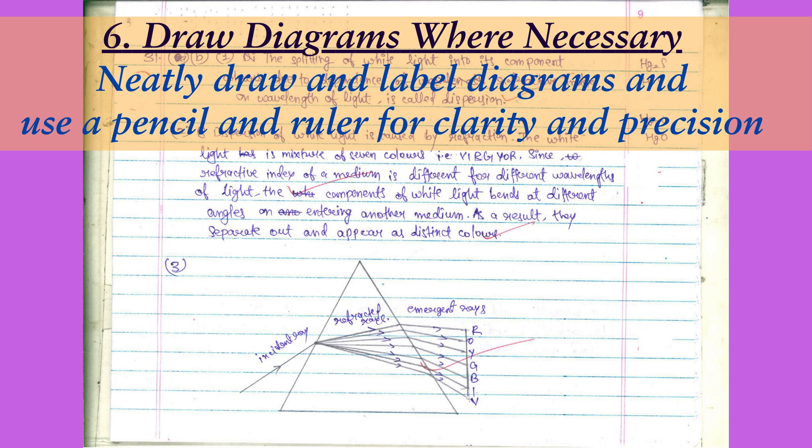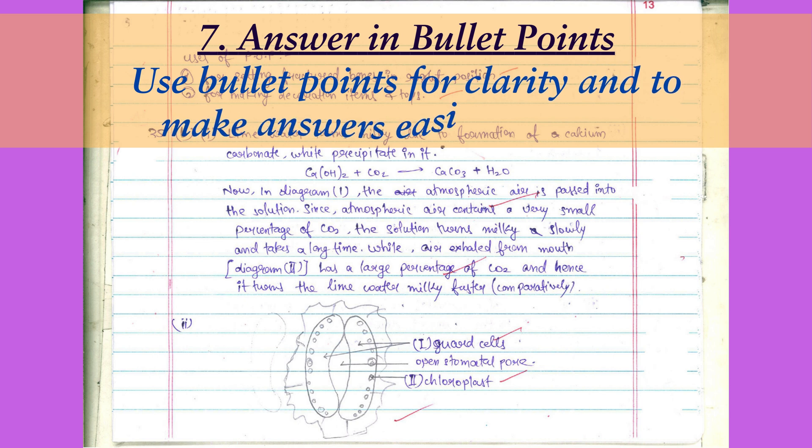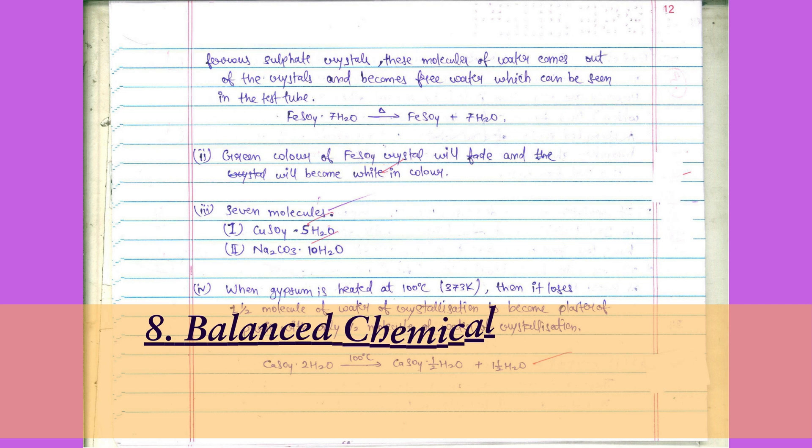Seventh point: Answer in bullet points. Bullet points make your answers more structured and visually appealing. This can also help you avoid long, unnecessary explanations. Next, we'll move on to point number eight.